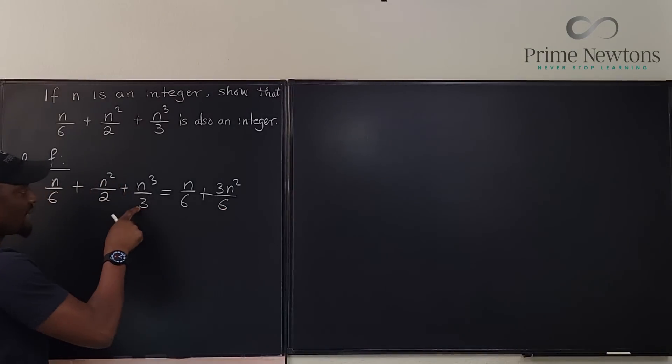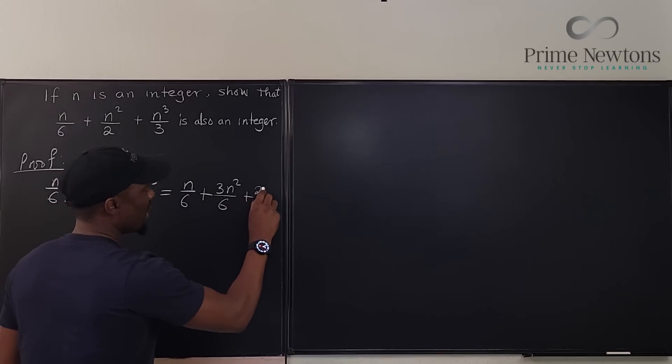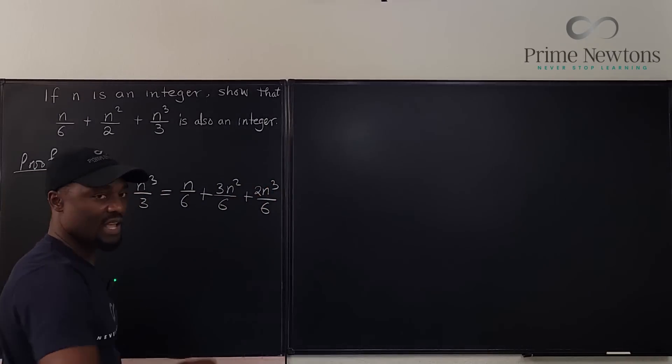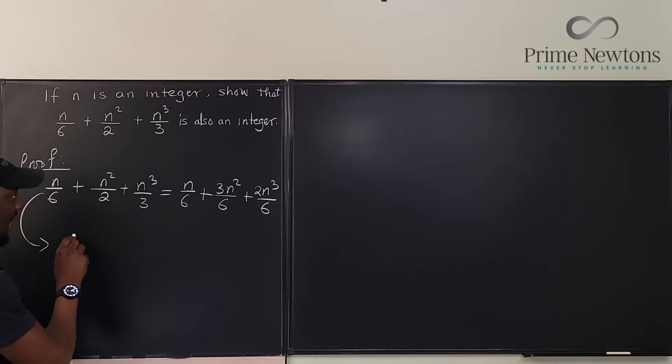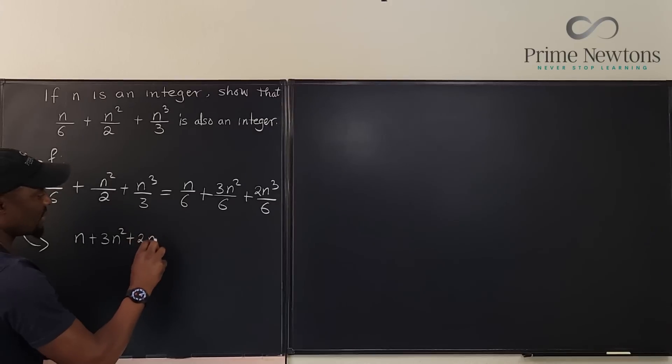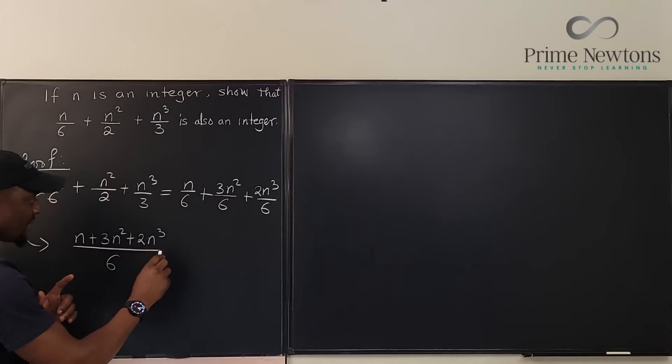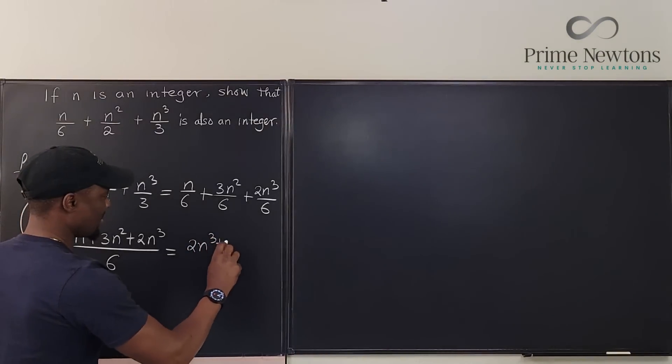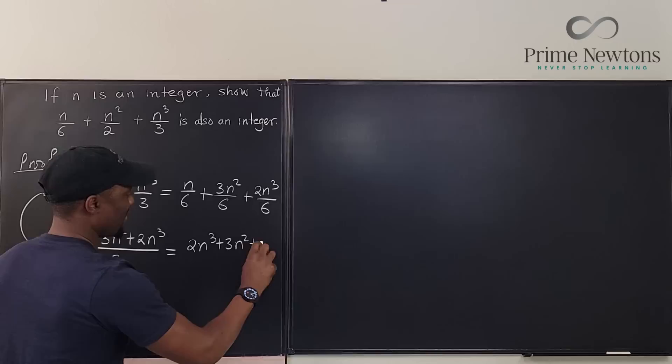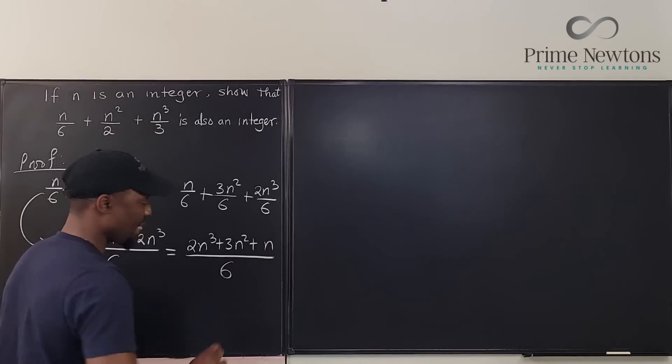Multiply this by 2, the top and bottom, 2n cubed over 6. Now we have everything with a denominator of 6, so this becomes n plus 3n squared plus 2n cubed all over 6, which you can rearrange to 2n cubed plus 3n squared plus n over 6.